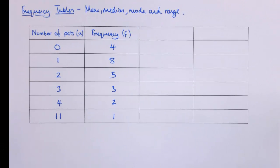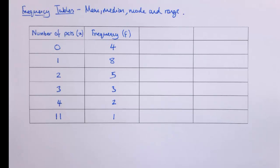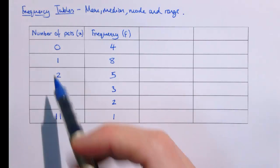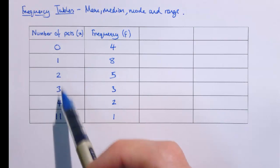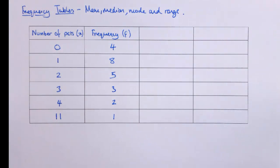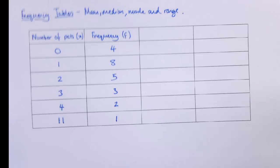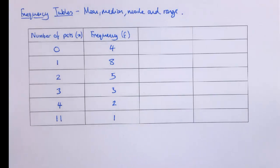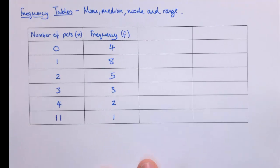In this video I'm going to look at frequency tables, and these are a very useful way of summarising data. The other day I asked one of my classes how many pets everyone in the class had, and they gave me different answers. Some people had no pets, some had 1, 2, 3 or 4, and there was one person who even had 11 pets — I think they were insects or something. I've summarised that data in this table.